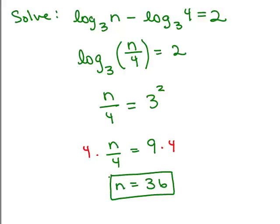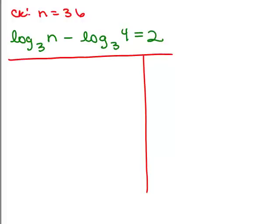Now, you want to go back up to the original and make sure this makes sense. First of all, when you put in n, make sure you're not taking the log of a negative number and you're not because it will be positive there. Now let's do the full check. So let's put in 36 for n, log of 36 base 3 minus the log of 4 base 3.